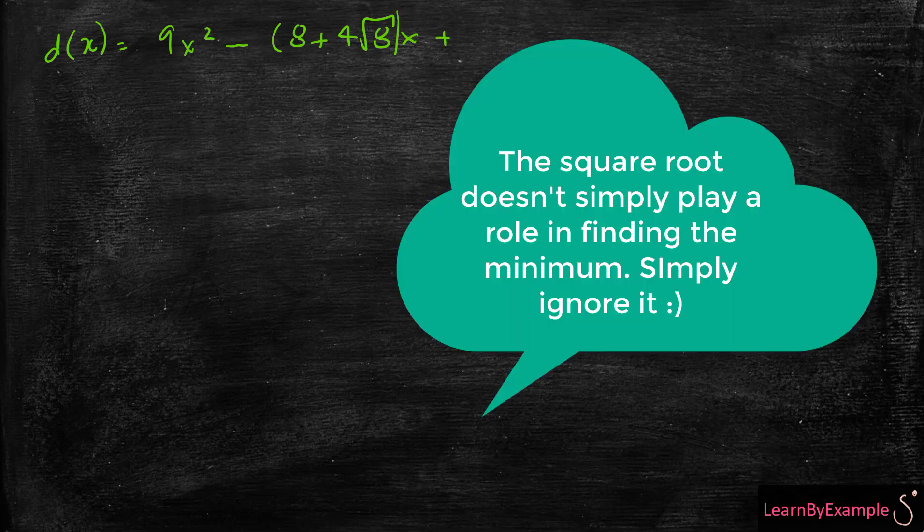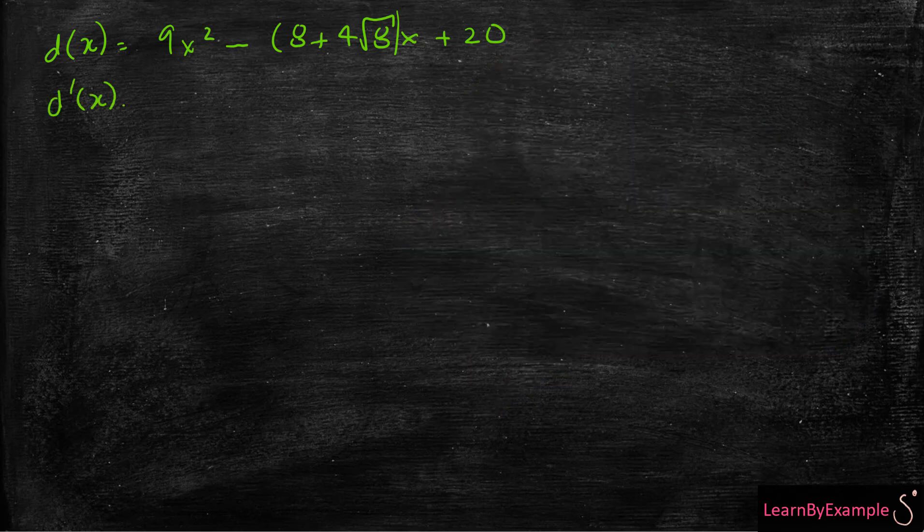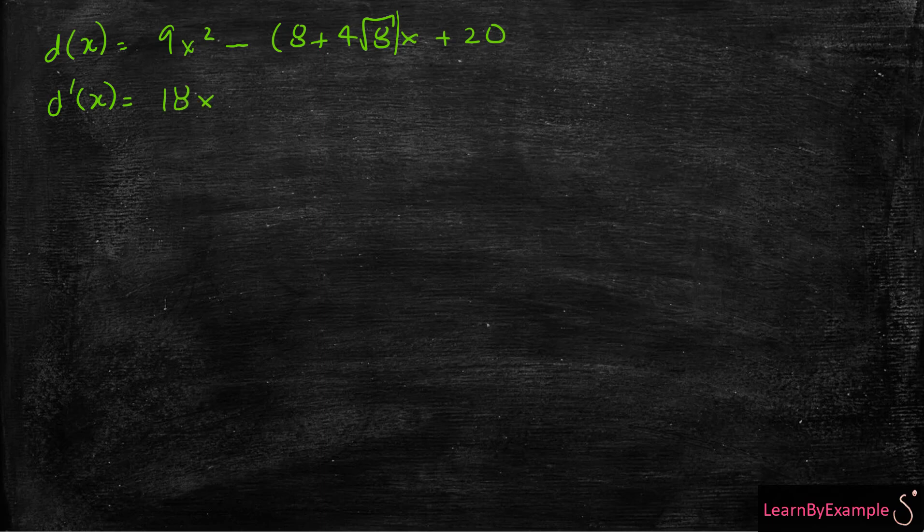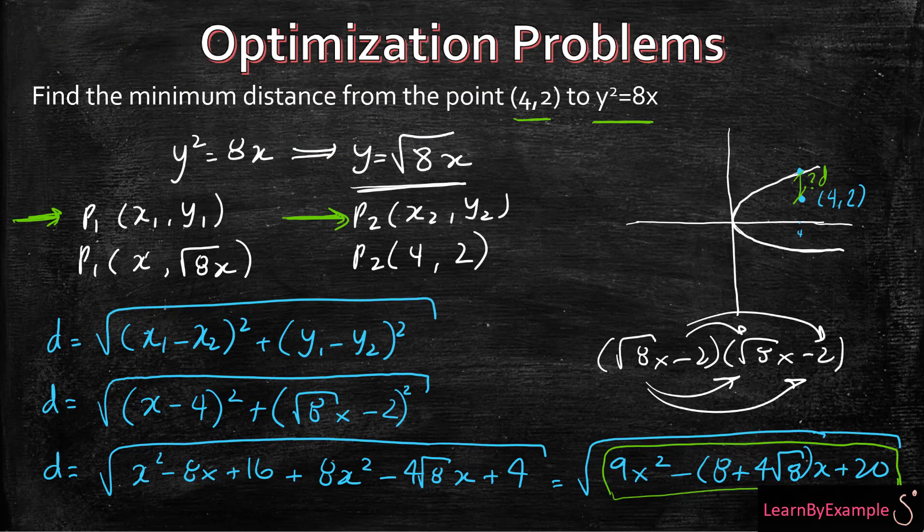So once again, we know that in this case d(x) is just going to be equal to 9x² minus (8 plus 4 root 8)x plus 20. So let's take that derivative now. So d'(x) is 18x minus (8 plus 4 root 8), and we're going to set all that equal to 0. And when you solve all of that, you're going to get that x is equal to 1.07. You can take that x now and plug that into the square root and then find out what the distance is.